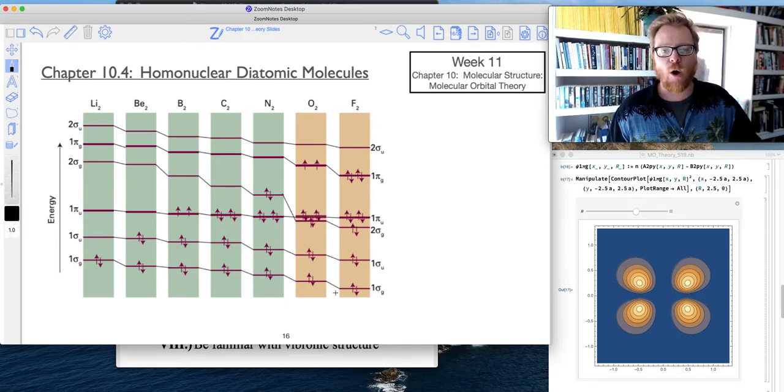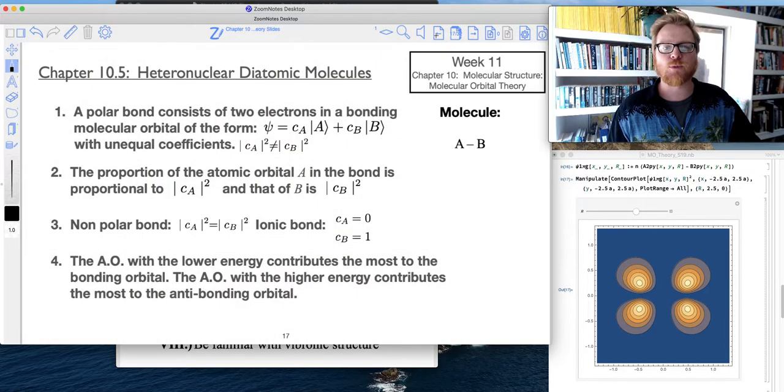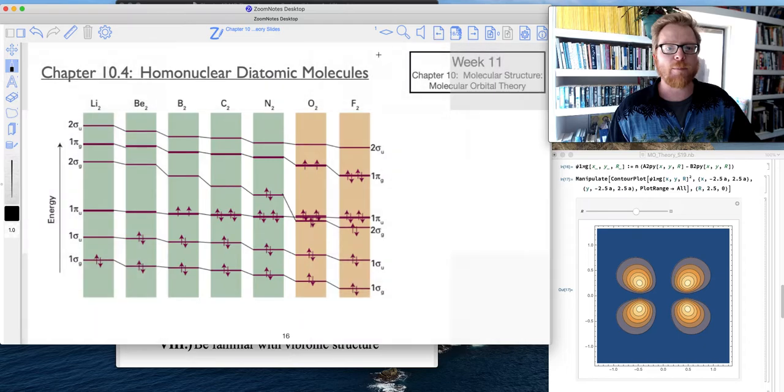And so as we populate electrons through, what I want you to keep in mind is we want to really keep track of where we put all of these things. So 1 pi U, 1 pi G, 2 sigma G, 2 sigma U, because where I'm going next with this thing is describing polar bonds and how we do molecular term symbols.